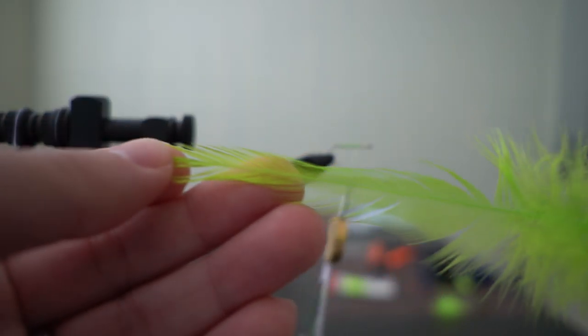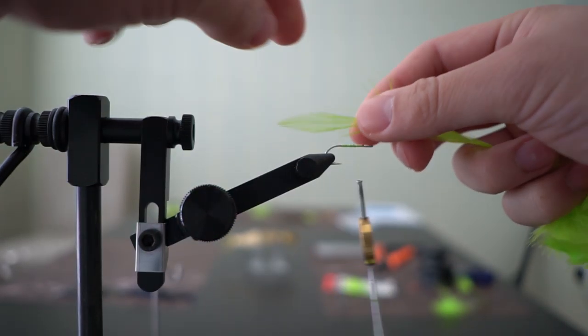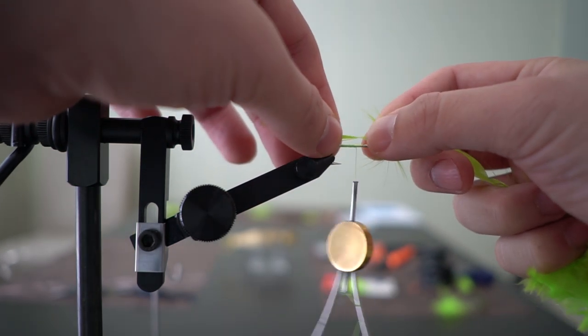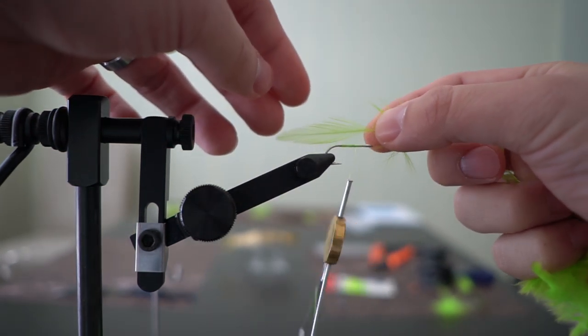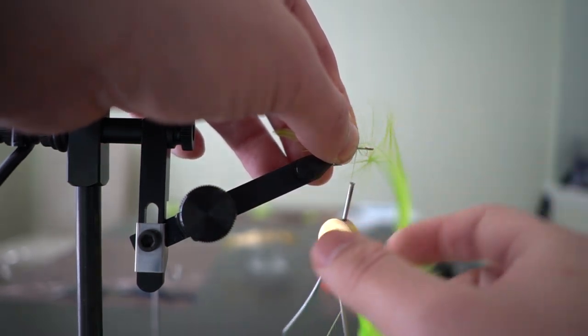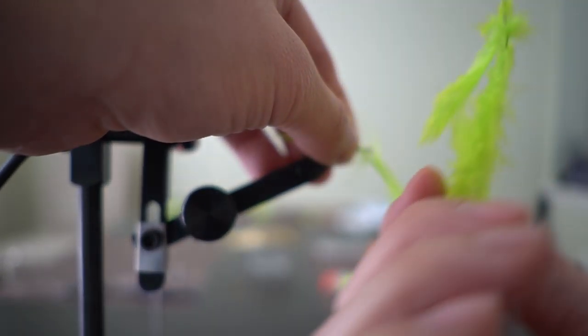All right, so now, we'll take this tackle, and we're going to use just about all these feathers here. So, we want this at the tail, like that. So, let's stroke this back, and we want it about right here. Okay? So, I'm just going to tie this down just a little bit, just like that.